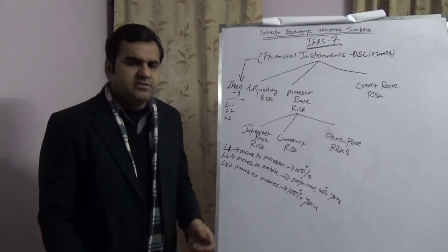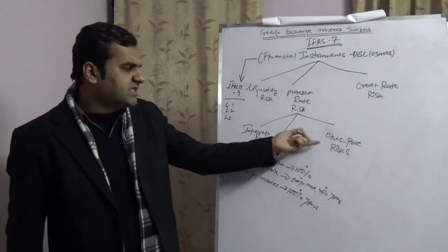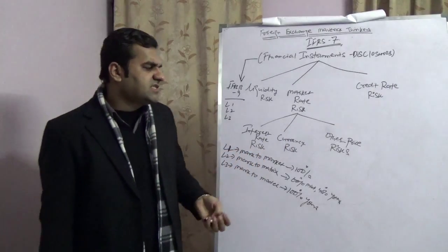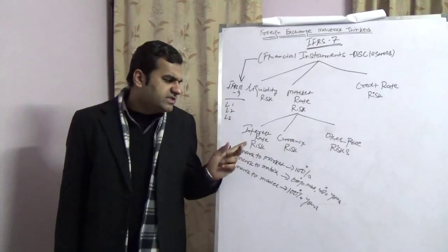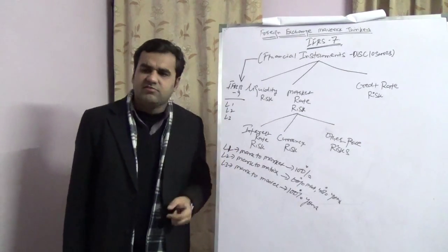Market risk is divided into three parts: interest rate risk, currency risk, and other price risk. Other price risk refers to all the risk which does not pertain to interest rate risk and currency risk. Interest rate risk we know all about.